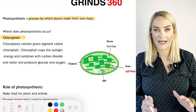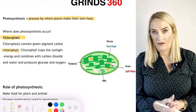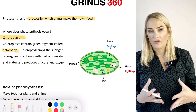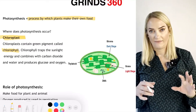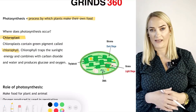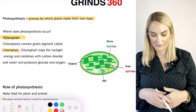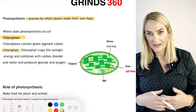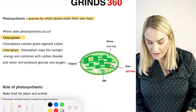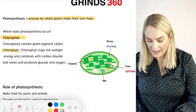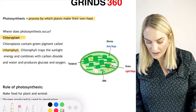The chloroplast contains a green pigment called chlorophyll. What the chlorophyll does is trap sunlight, letting it combine with carbon dioxide to produce water, glucose, and oxygen.